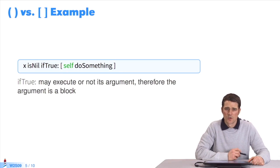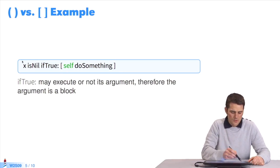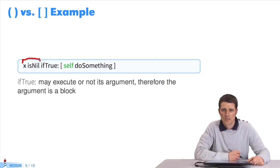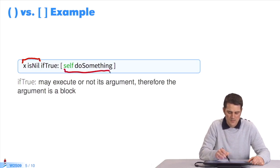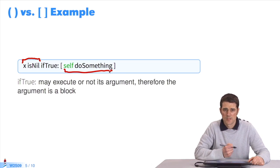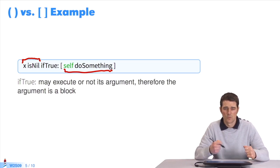Another example, this time I send the message if true. Depending on the receiver, depending on whether this expression is true or false, you execute or don't execute the expression self do something. I can't use parentheses since, if needed, it won't be executed at all. If you put it in a block, you can decide whether you send it the message value.